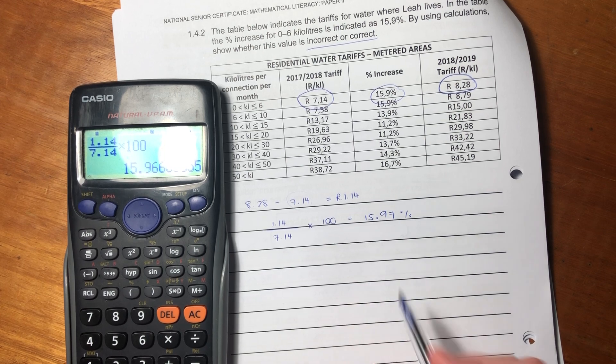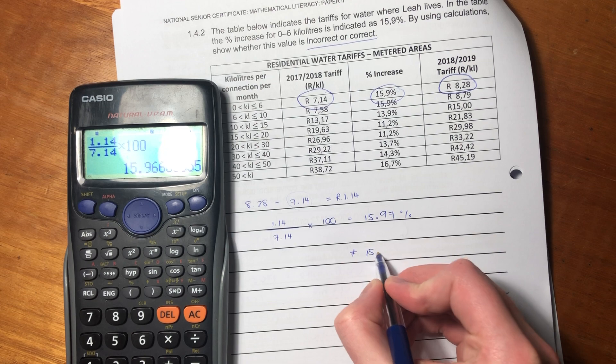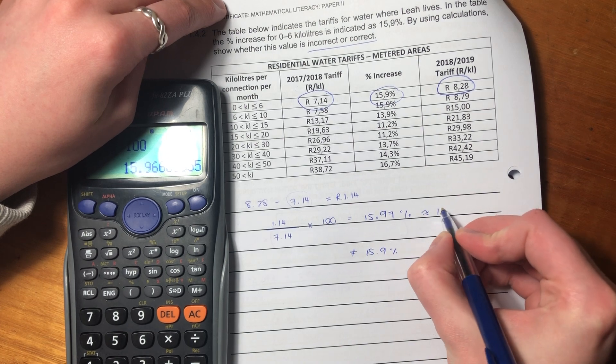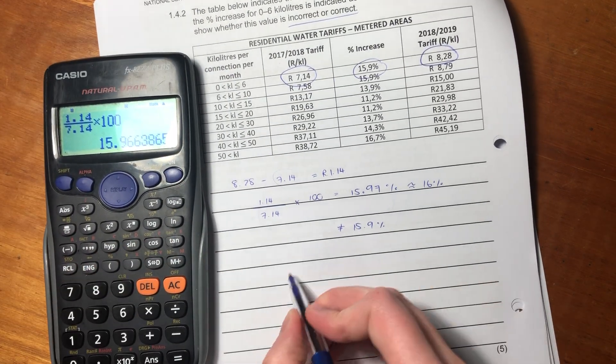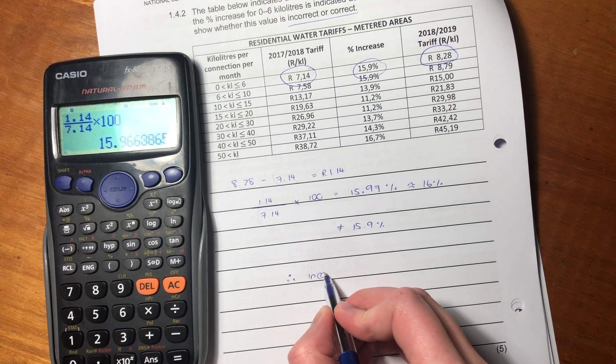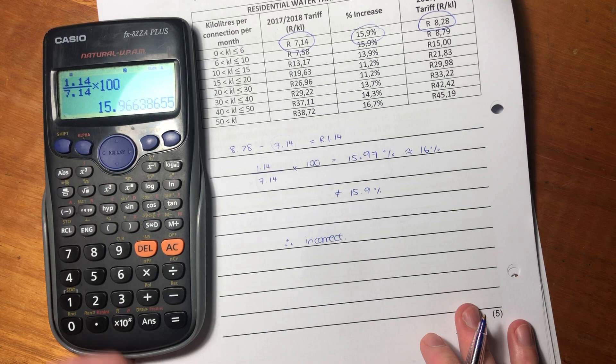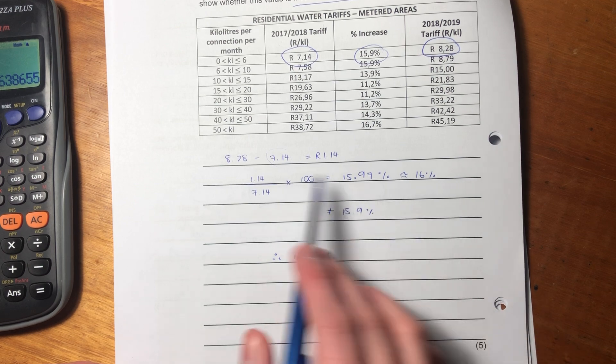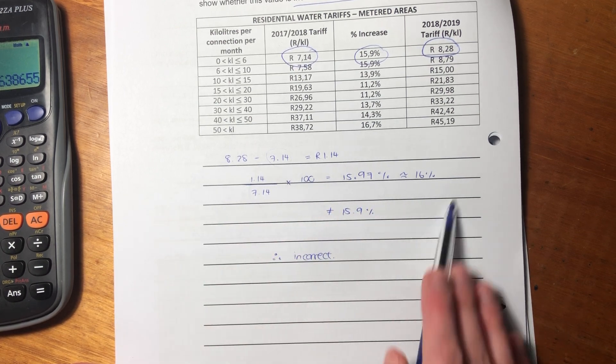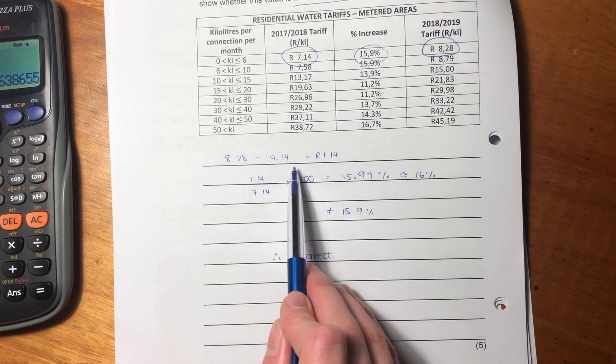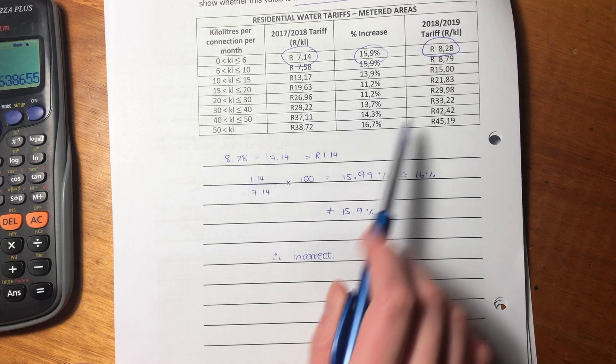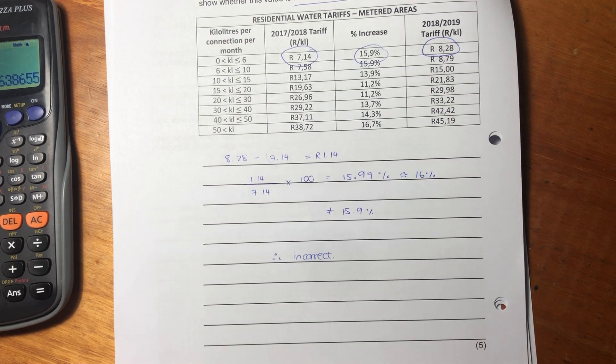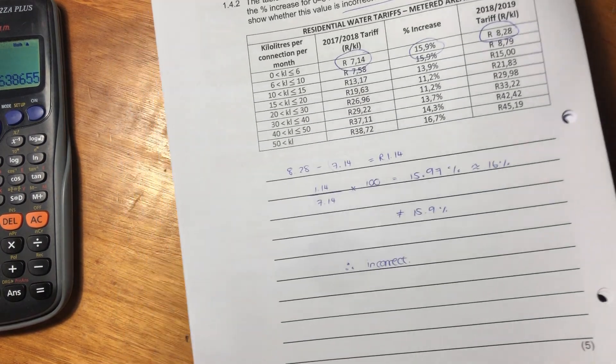What's interesting here is that does not equal 15.9. If I round that off to the nearest percent, it's actually equivalent to 16%. Therefore, it's incorrect. 15.9 is not correct. That is how we go about doing it. It's five marks, so there's a lot of moving pieces here, but it's just you wanting to demonstrate that you understand how to calculate this is basically a markup, it's an increase over a time period.